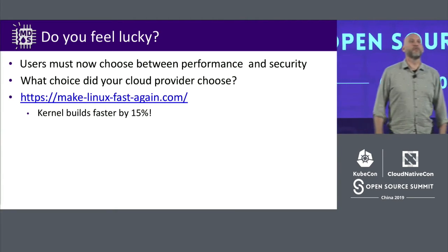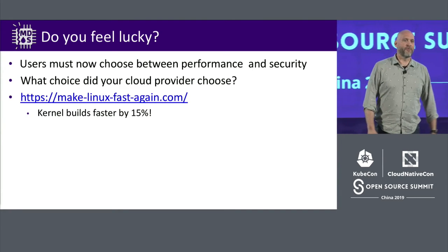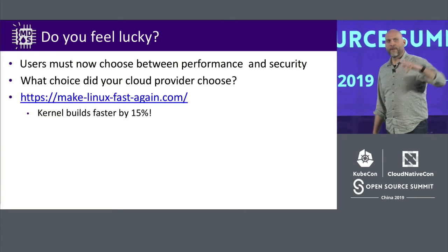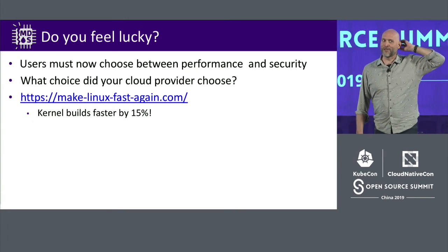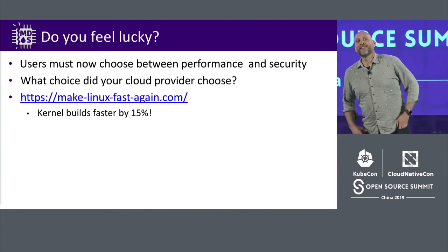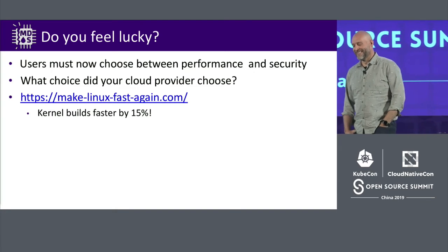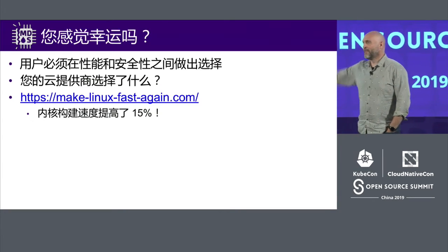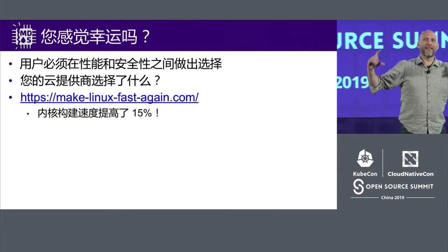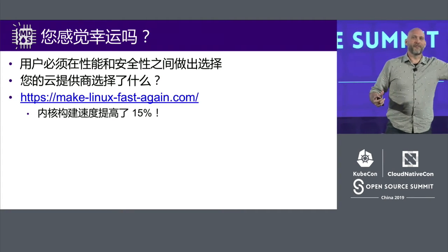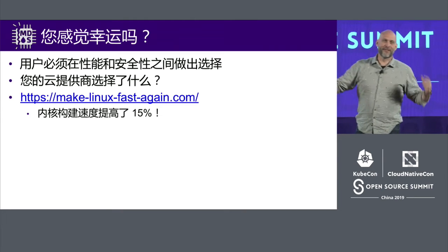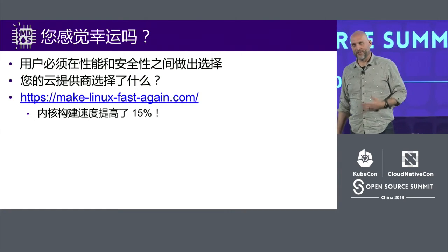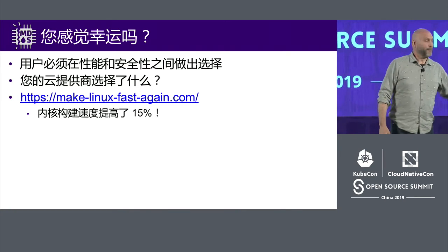The bad part is now you have to choose: performance or security. That's not a choice anybody wants to make. And you're relying on your cloud provider to also make that choice. I have test machines in the cloud, and my cloud provider chose performance over security. Look and see what yours did — I'm now switching cloud providers. There's a website called Make Linux Fast Again — kind of a joke — but it gives you the command line to strip out all the security mitigations and make things faster. My kernel builds are 15% faster with it. That's how much performance has decreased in the past year just from dealing with these security issues.